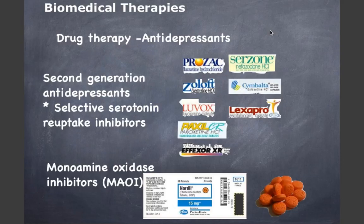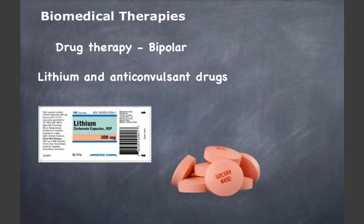Monoamine oxidase inhibitors (MAOIs) block the action of an enzyme that breaks down norepinephrine and serotonin in the synapse, increasing the availability of those neurotransmitters. They are usually prescribed to patients who do not respond to other antidepressants. Side effects are similar to tricyclics, and patients must avoid certain foods to reduce the risk of stroke. As seen across these drugs, there are benefits but also side effects for a certain proportion of the population.